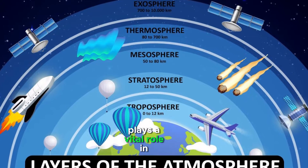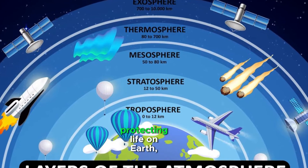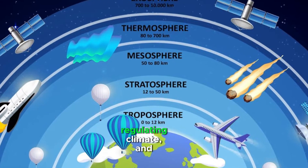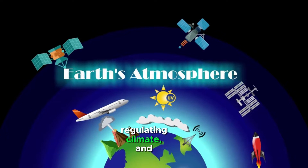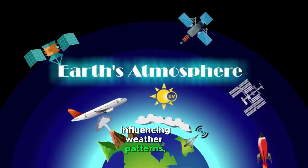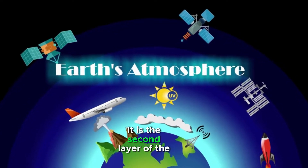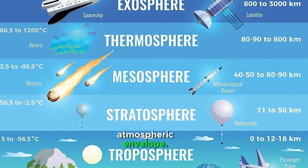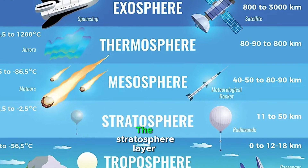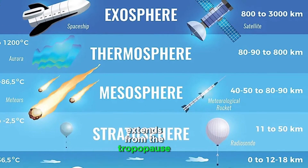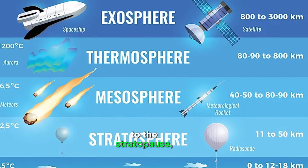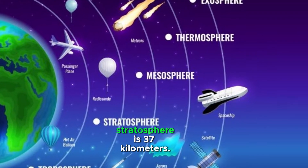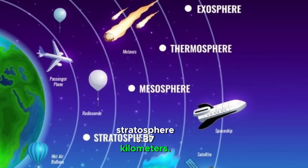The stratosphere plays a vital role in protecting life on Earth, regulating climate, and influencing weather patterns; it is the second layer of the atmospheric envelope. The stratosphere layer extends from the tropopause to the stratopause, and its thickness is 37 km.